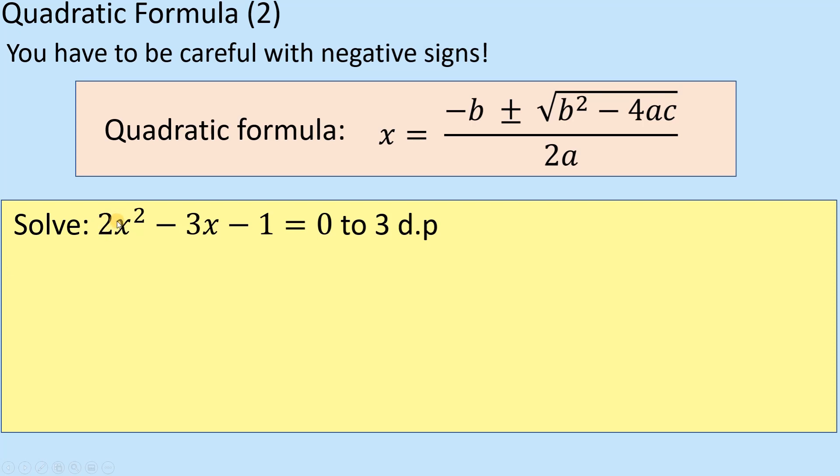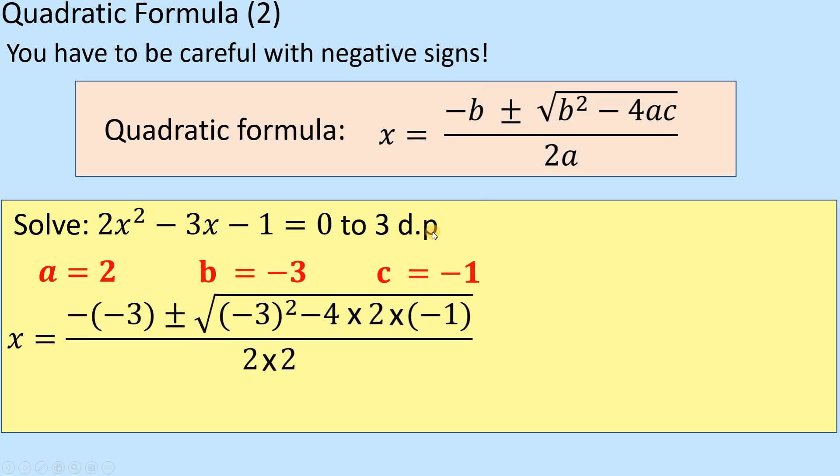Looking at my values of A, B, and C, and it does equal zero so we're okay. My value of A is 2, my value of B is minus 3 because it's a negative, and my value of C is minus 1. Writing those three down is a worthwhile step. Keep your eye very closely on these negatives because it's going to make a big impact when I put them into here.